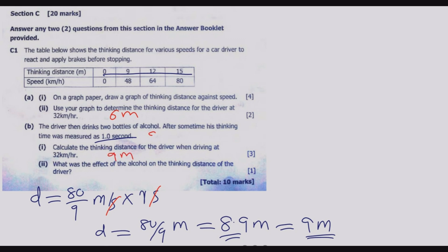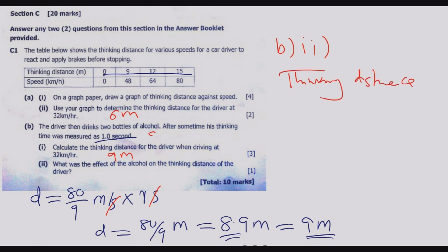Comparing results: from the graph, the sober driver's thinking distance at 32 km/h was 6 meters, and the drunk driver's thinking distance is 9 meters. For question (b) part (ii): the effect of the alcohol on the thinking distance — the thinking distance increases by 3 meters. Alcohol increases the thinking distance by 3 meters.